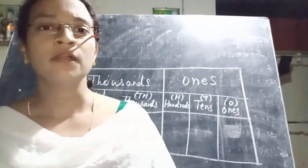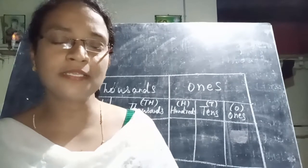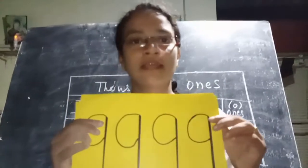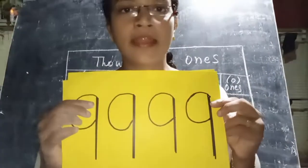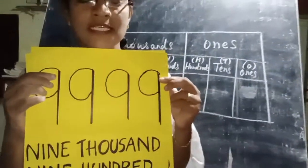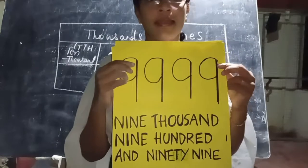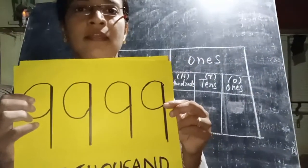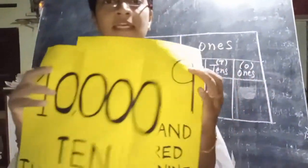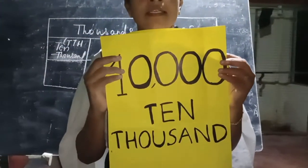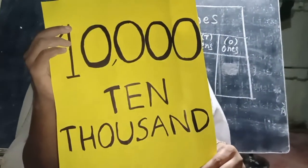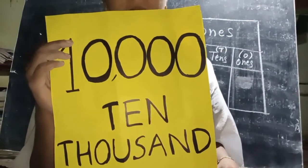Do you know which is the largest four-digit number? The largest four-digit number is 9,999. When we add 1 to this number, we get the smallest five-digit number. And the smallest five-digit number is 10,000.